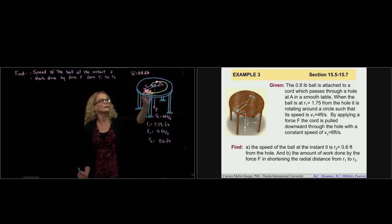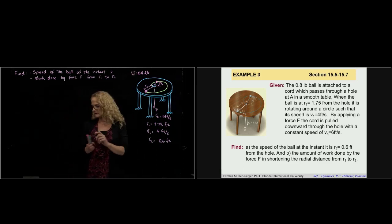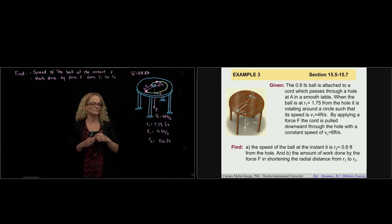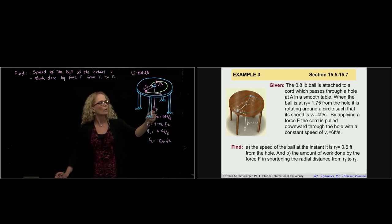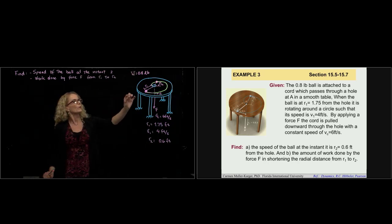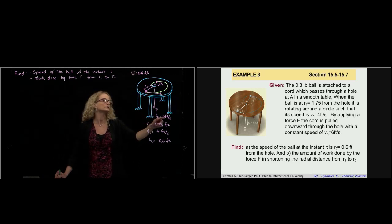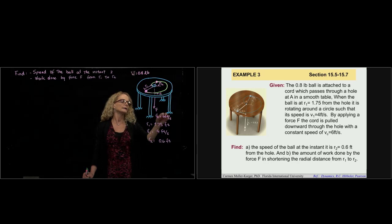When the ball is at R1, which is 1.75 feet, the velocity is 4 feet per second. Recall that the velocity is always tangent to the trajectory, so that's velocity 1. By pulling that cord through the hole, the ball gets closer to the hole, and the cord is being pulled down with a constant velocity of 6 feet per second.